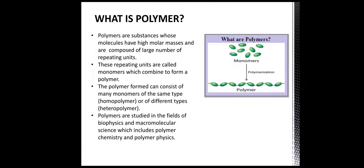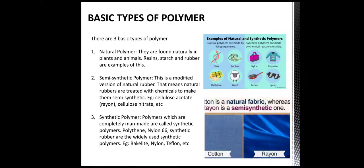Polymer study is very vast in biophysics and includes polymer chemistry and polymer physics. There are three basic types of polymer. First is natural polymer — these are derived from natural sources, made by nature without any modification by humans. Resin and starch are some examples. Semi-synthetic polymers have a natural polymer base with some modification by humans to improve physical or chemical properties — for example, cellulose acetate, also called rayon, and cellulose nitrate. Synthetic polymers are artificially made by humans, for example Bakelite, nylon, and Teflon.